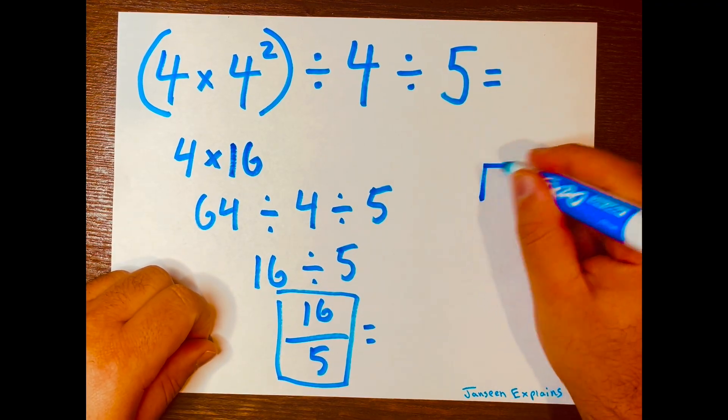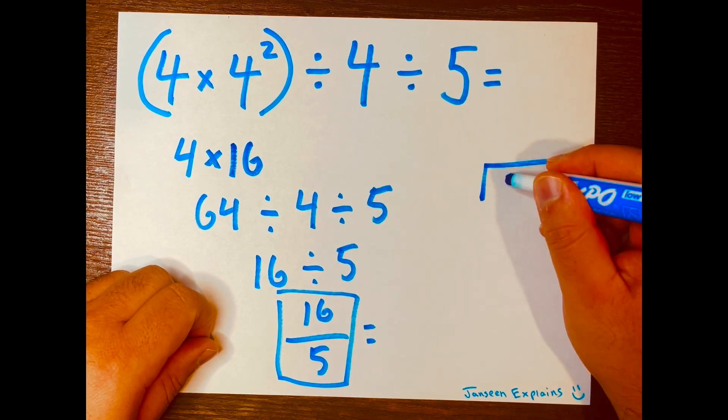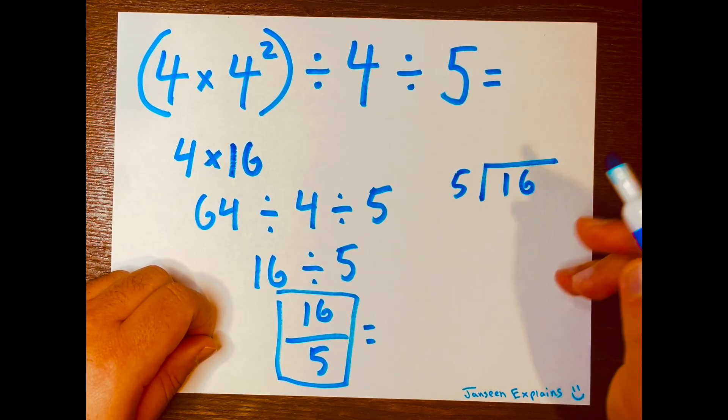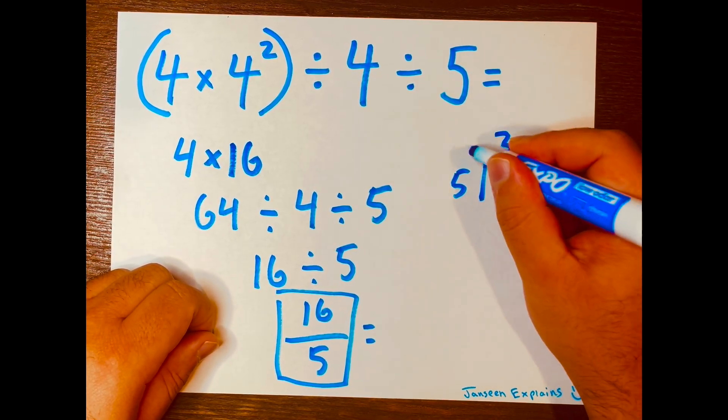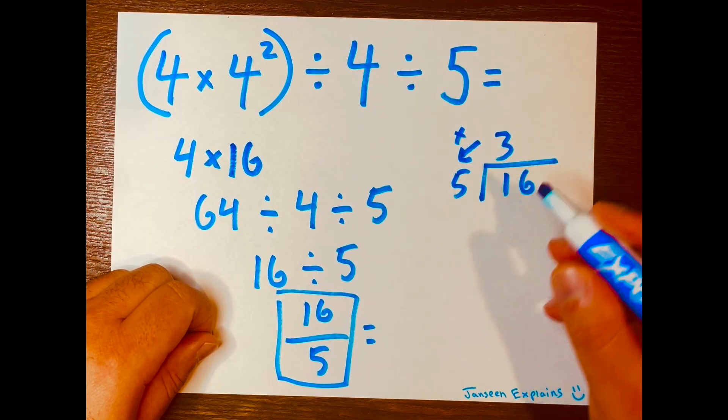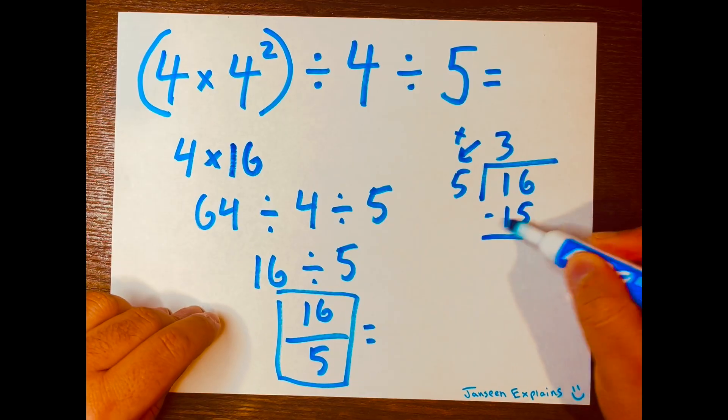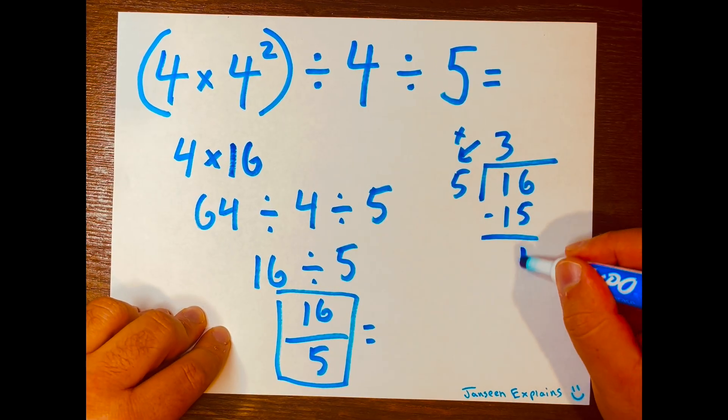So long division, 16 will be the dividend, five will be the divisor. How many times can five fit into 16? Three times. Three times five is 15. So now we have to subtract. 16 minus 15 is one.